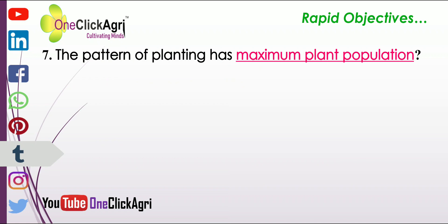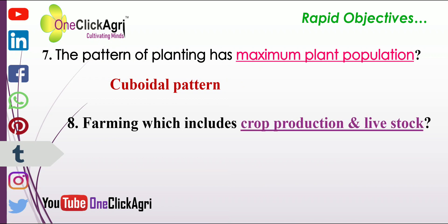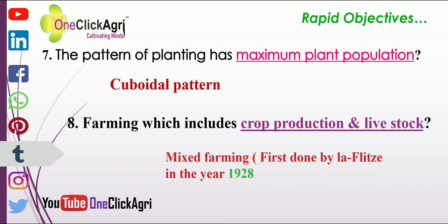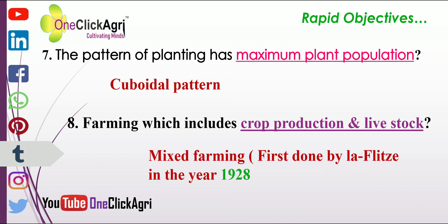The objective of sustainable agriculture is ecological balance. The pattern of planting that gives maximum plant population is the B pattern. Farming which includes crop production and livestock is mixed farming, first done by La Fleet in the year 1928.